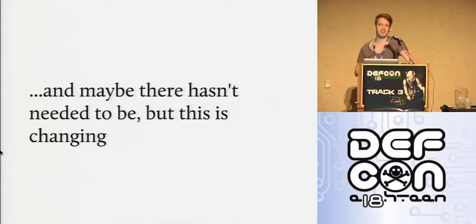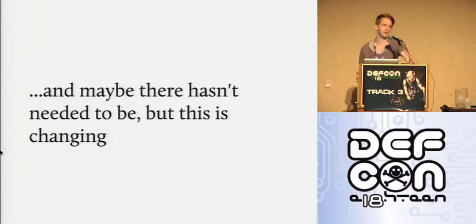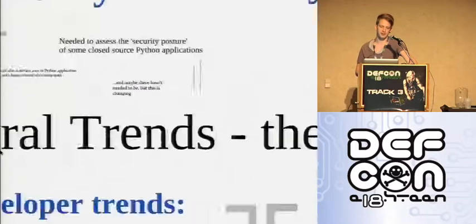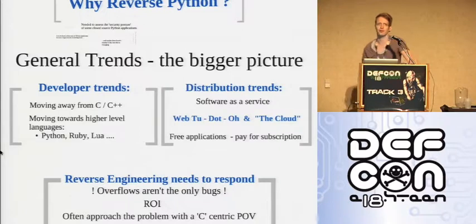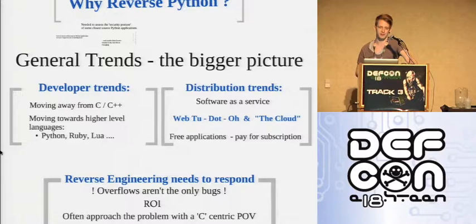In the past there hasn't needed to be much work in this space because people hadn't been distributing obfuscated Python — they were just throwing the .py files out, so you could read the source code anyway. But this is changing. There are some bigger picture trends: people are moving away from developing in C and C++ for all the reasons that many people have struggled with for the last 20-30 years.